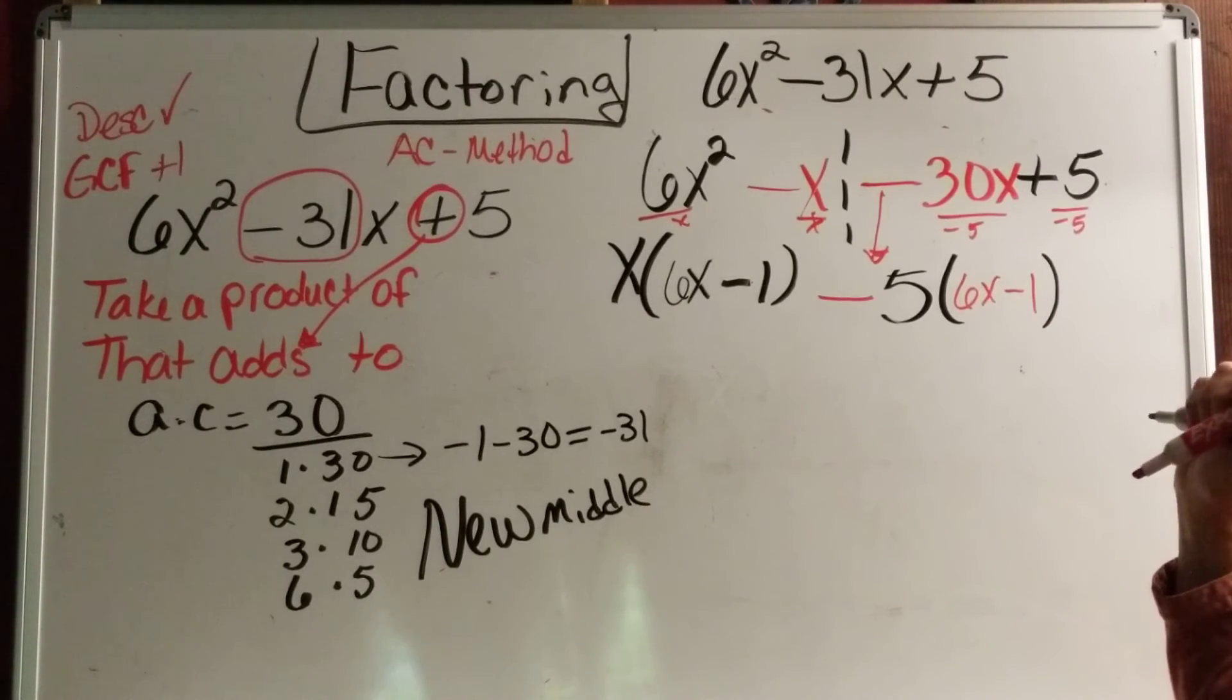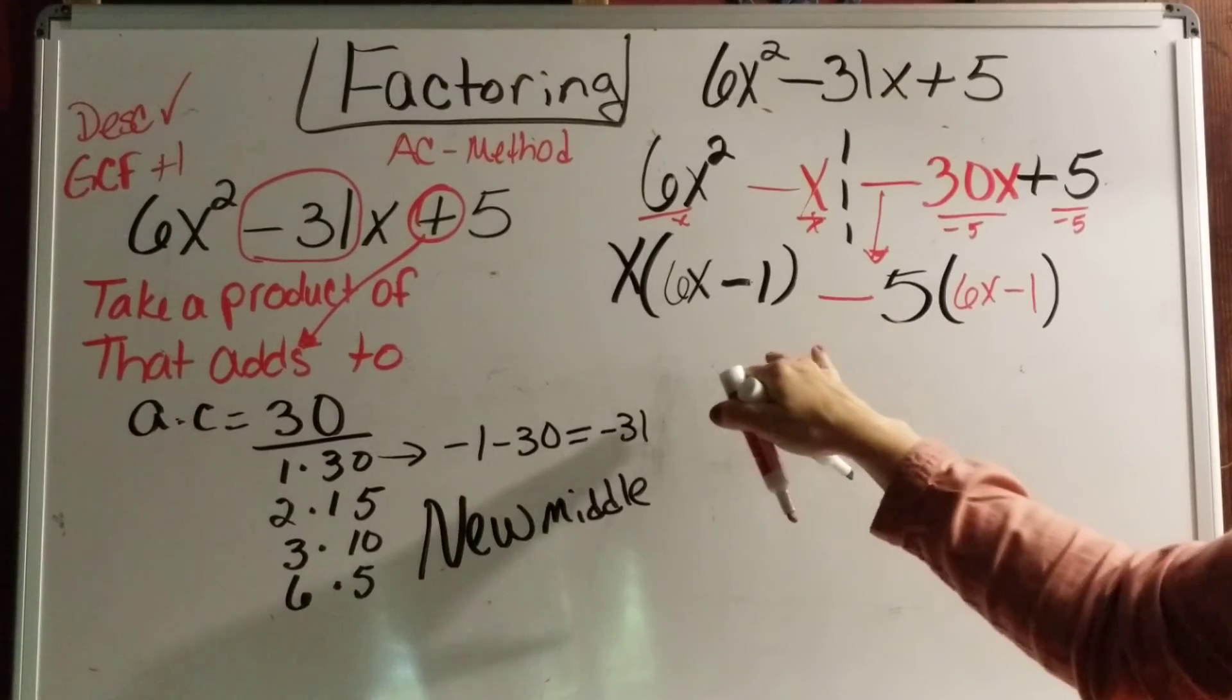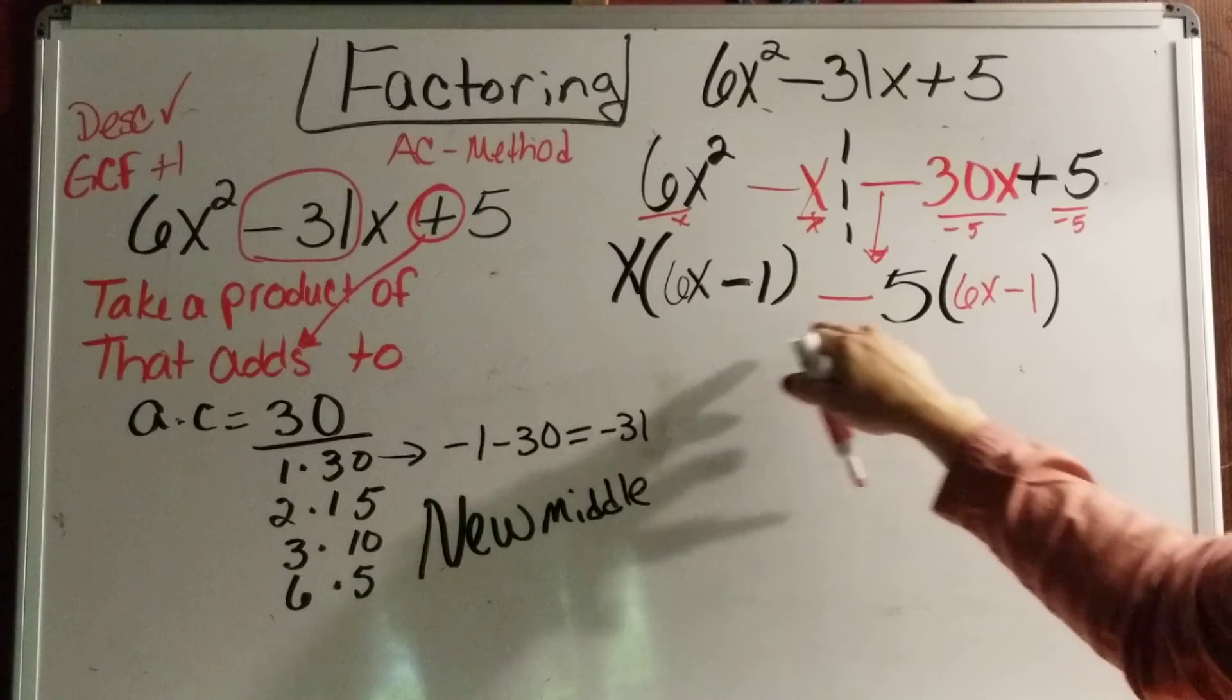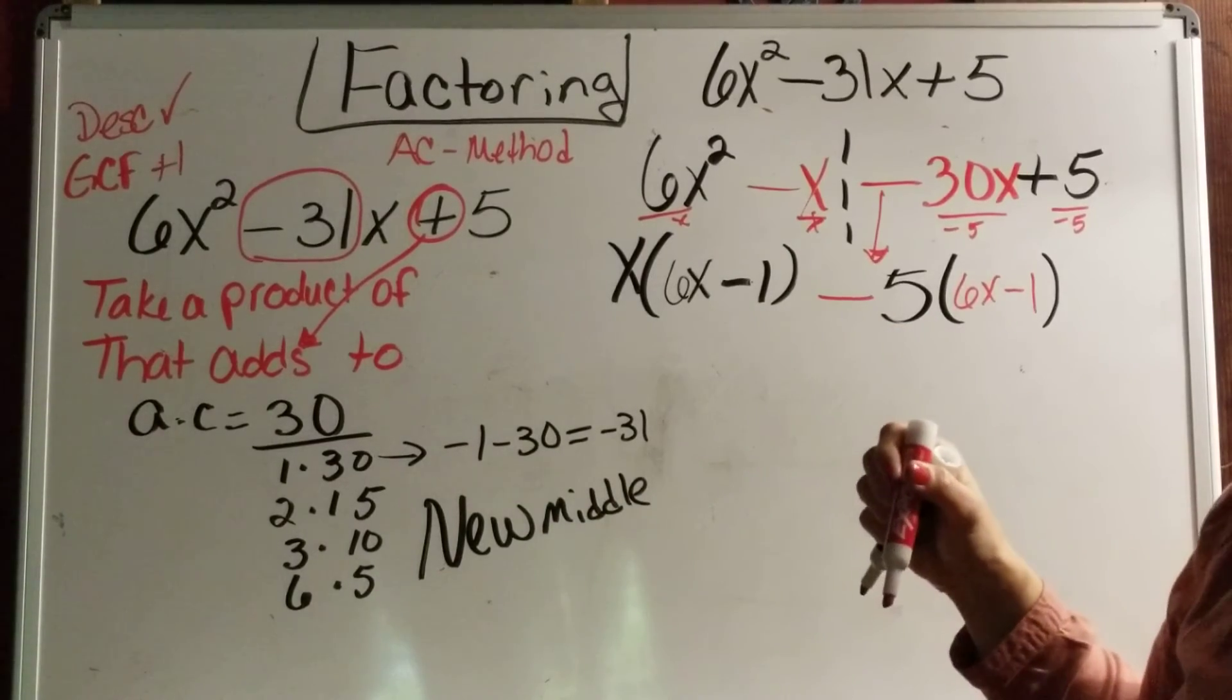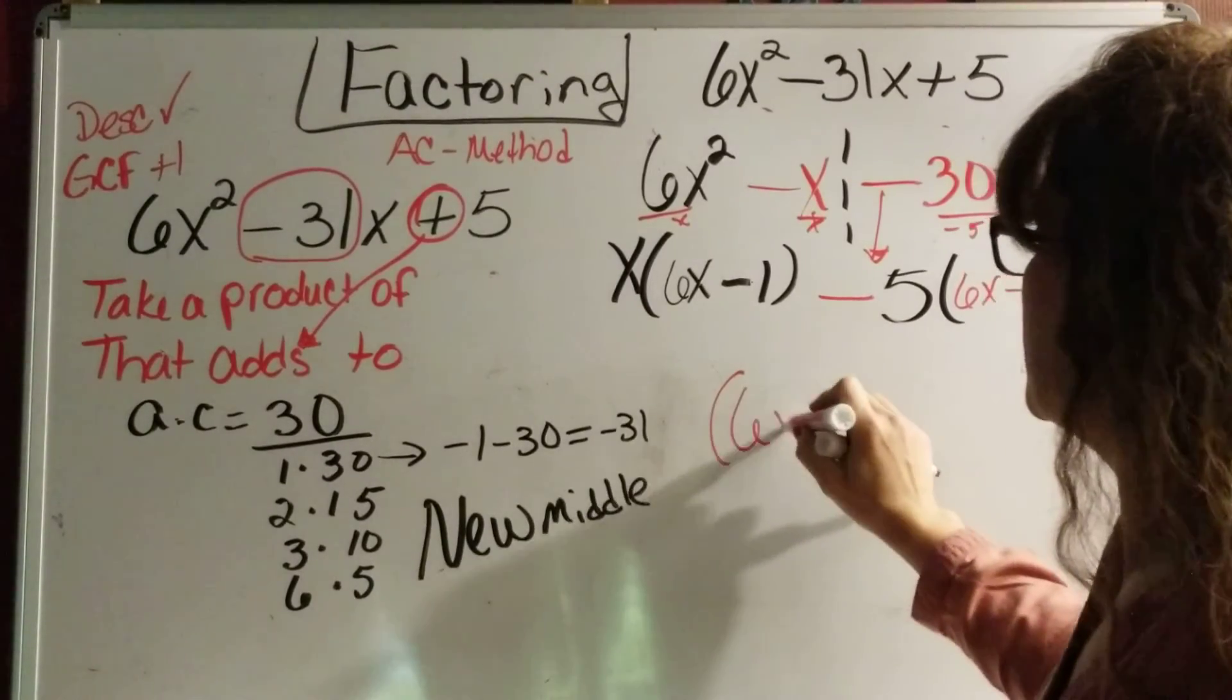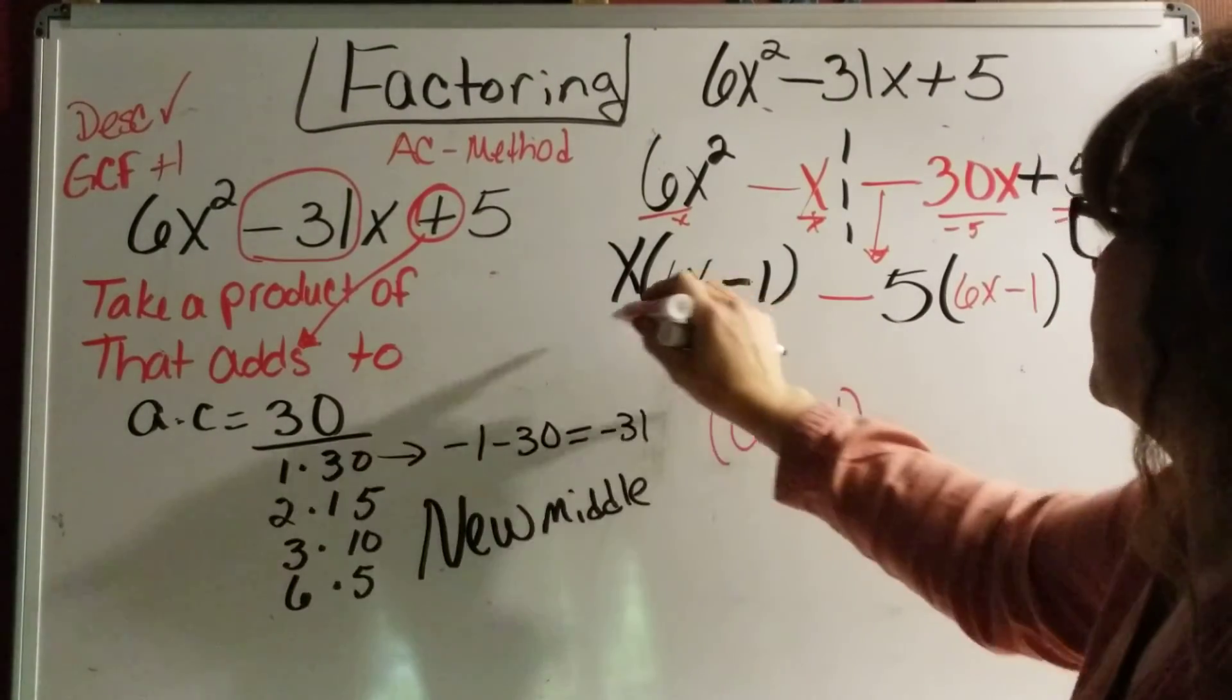So now let's look at it. Do we have anything in common? Well, I have this term minus this term. And I notice the parentheses are alike. So that's my greatest common factor now. So I'm going to factor out the 6x minus 1. And when I do that, it's the same as dividing by it.